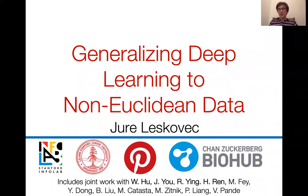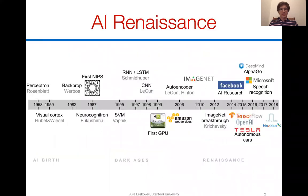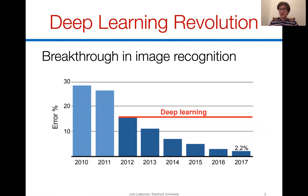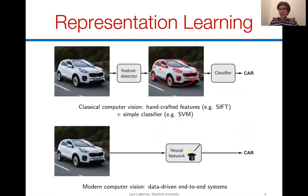This talk will be about how we generalize machine learning to non-Euclidean and in particular graph-structured data. Today we are witnessing the renaissance of AI with amazing breakthroughs happening in all kinds of different machine learning technologies and applications — from computer vision, question answering, game playing, speech recognition, self-driving, and so on. What has really given rise to this revolution has been deep learning, demonstrated by recent breakthroughs in image recognition. An important concept that comes out of deep learning is the notion of representation.